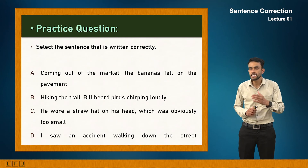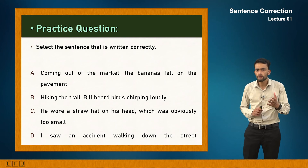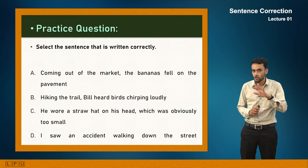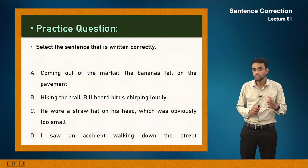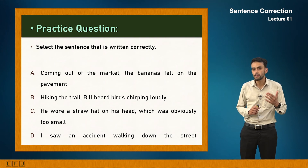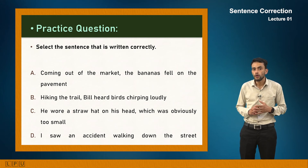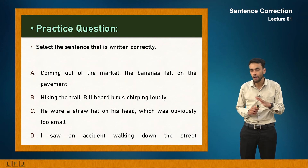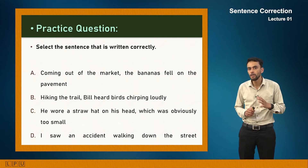Practice question — select the sentence written correctly. Option A: 'Coming out of the market, the bananas fell on the pavement' — wrong, bananas don't come out of a market. Option B: 'Hiking the trail, Bill heard birds chirping loudly' — correct, Bill was hiking. Option C: 'He wore a straw hat on his head which was obviously too small' — modifier misplaced after 'head'. Option D: 'I saw an accident walking down the street' — absurd modifier placement. The correct answer is option B.